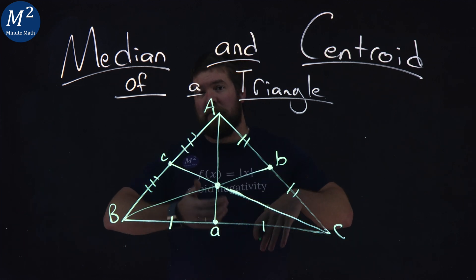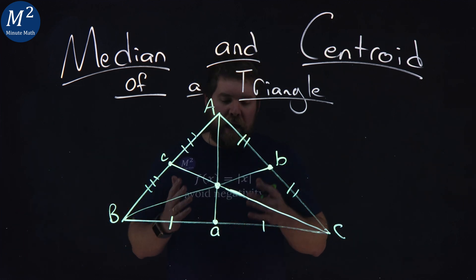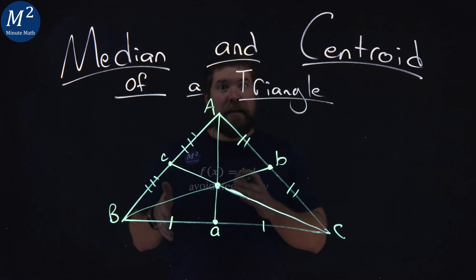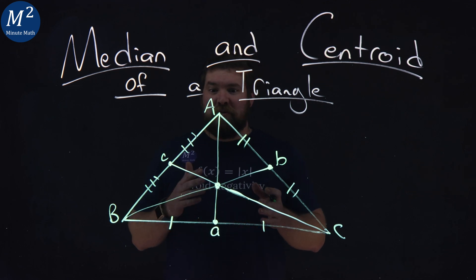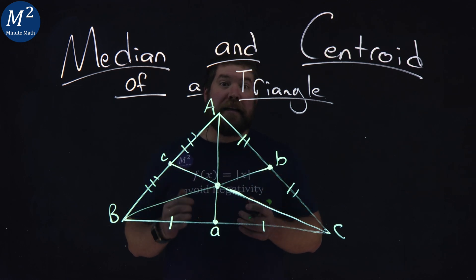But what about other types of triangles? Right triangles, obtuse, acute triangles? How does this look? And luckily there's software that really makes this easier to see all of them really play out. So I'm going to hop onto Maple Learn here and really show what this looks like in many different forms.